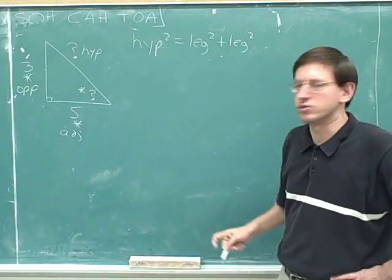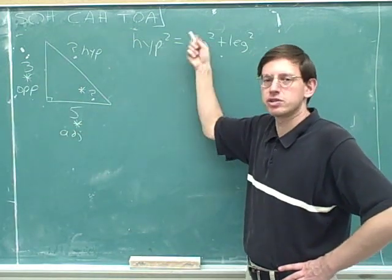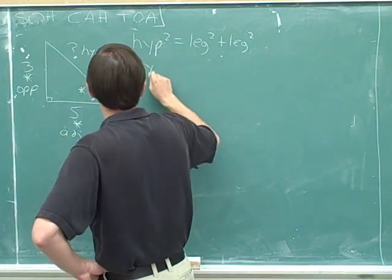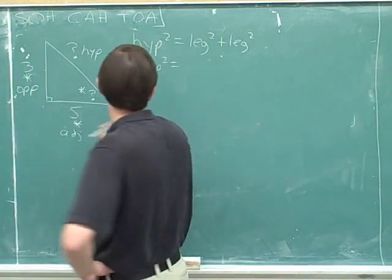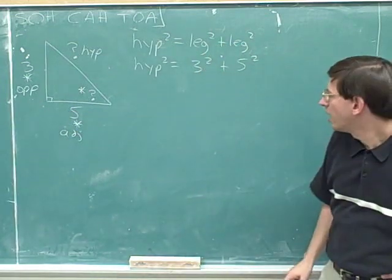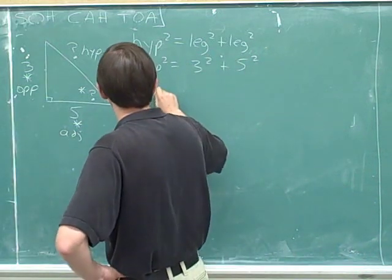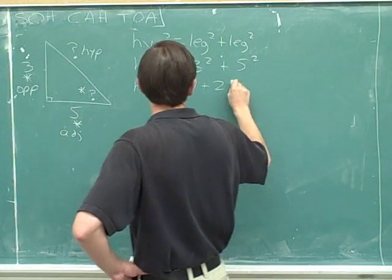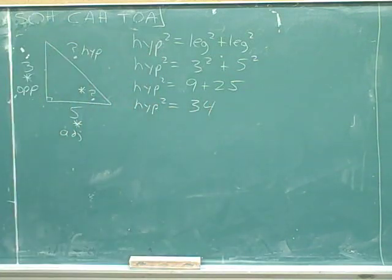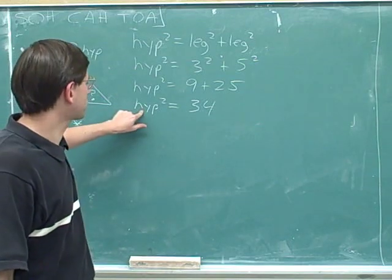This is clearly the right formula to use because we're trying to find the hypotenuse and we already know both legs. So let's plug in: the hypotenuse is unknown, one leg is three and the other is five. The hypotenuse squared equals three squared plus five squared. Three squared is nine, five squared is twenty-five, and nine plus twenty-five is thirty-four. So the hypotenuse squared equals thirty-four.